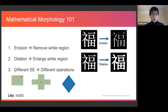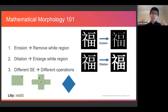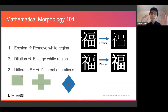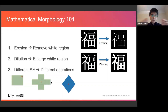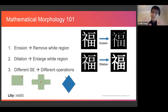The parameter is really the structuring element. A different structuring element gives a different operation with a different effect on the image. This erosion is based on a three-by-three square, but you can also use a cross, a digital circle, or a rectangular shape. For now we just focus on the square to make explanations easier.